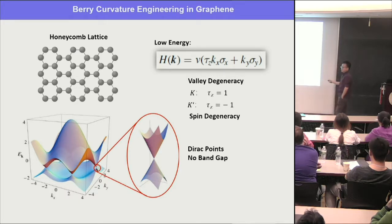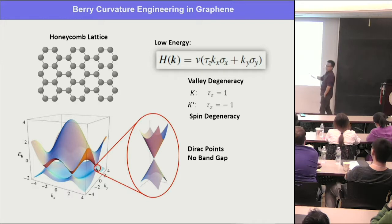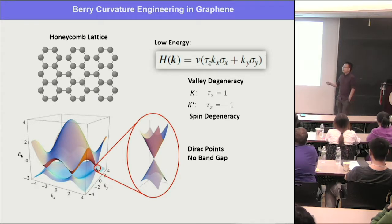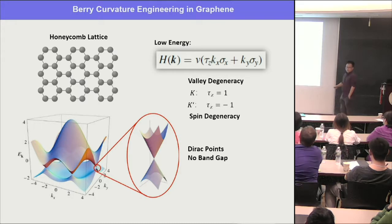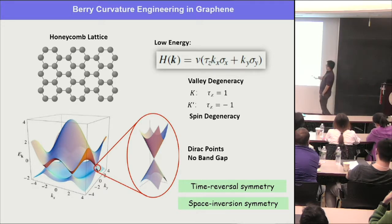In graphene, the low-energy band structure is described by a 2×2 matrix Hamiltonian where you have only sigma-x and sigma-y and no sigma-z, because of the energy equivalence between the two sublattices. The off-diagonal term describing hopping between the two sites is kx + iky. You have two Dirac points with valley index tau = +1 and -1. You have valley degeneracy and spin degeneracy because the system has both time-reversal symmetry and space-inversion symmetry, giving a linear dispersion at the Dirac point with no band gap.